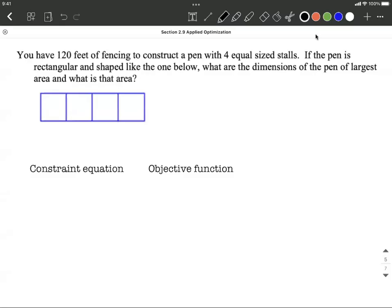Alright, let's find the largest area possible. On this one we have 120 feet of fencing to construct a pen with four equal size stalls. The pen is rectangular in shape like the one that's already drawn for us. What are the dimensions of the pen? So we're trying to optimize the largest pen possible, its area.